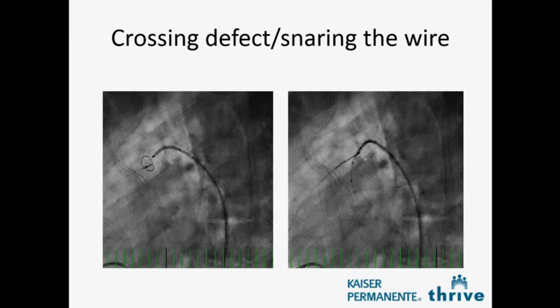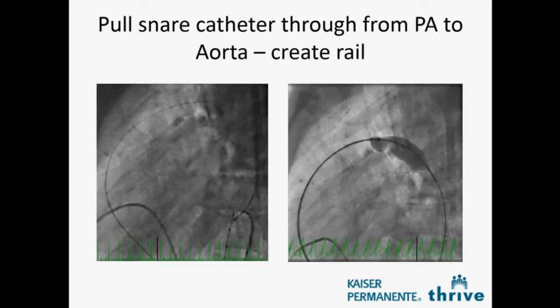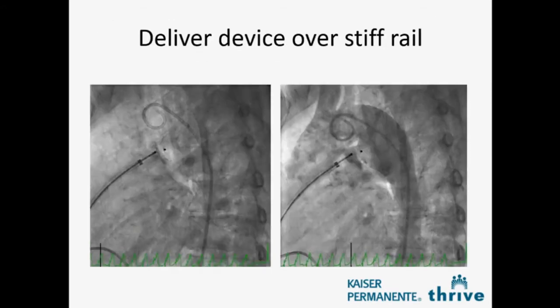The picture on the left shows a JR4 catheter in the aorta, pointed at the gooseneck snare in the pulmonary artery. We advance — in this case a Magic Torque wire — and snare it. Then we have a choice: do we pull or push to create the rail into the pulmonary artery or into the aorta? We pulled very gently with simultaneous pushing, not to slice anything, and pulled down into the descending aorta. We then unsnared and used a micro catheter to deliver a stiff rail — in this case an Amplatz Extra Stiff. Here's a sizing balloon to pick the appropriate PDA device size. The device was delivered from the pulmonary artery side with the disc on the aorta, confirmed with angiogram, and released.